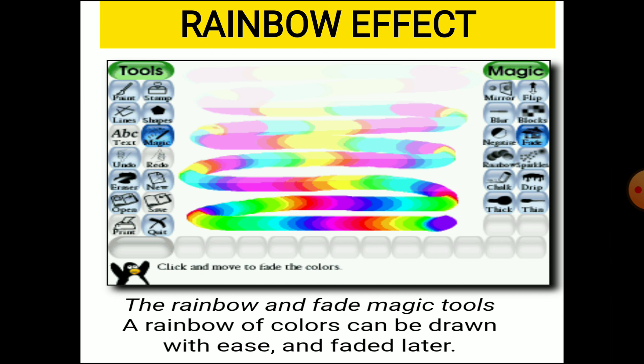The first is the rainbow effect. The rainbow and fade magic tools allow a rainbow of colors to be drawn easily. As you can see in a rainbow, there are different types of colors — seven colors — which we call VIBGYOR. When we get a paint brush in the rainbow effect and go to the drawing area canvas, it will draw with all the rainbow colors.